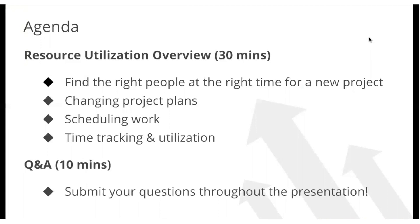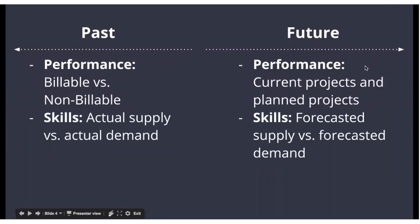Thanks Adam. Today we'll look at two ways to think about how busy your team is. First, the past: how billable versus non-billable your team was, and how skills — actual supply versus demand — inform decisions around hiring or bringing on contractors. The other side is future: how current and pipeline projects will affect team workload, and whether you have the right skill sets to fulfill on those projects.